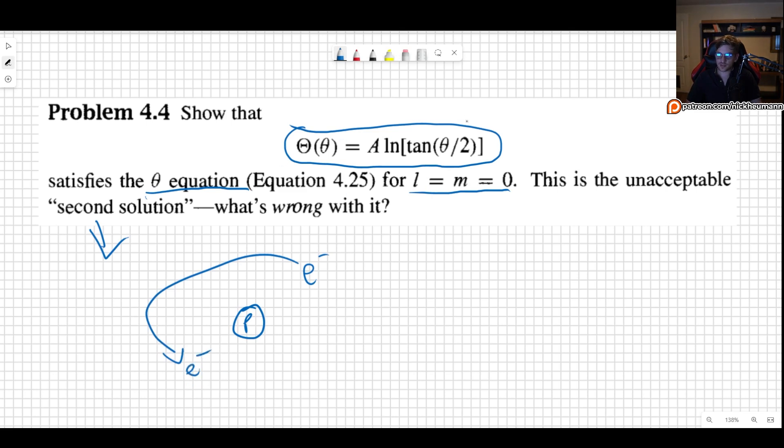However, take a look at this expression. Because if we have theta equal to pi, then we have tangent of pi over two, which is sine of pi over two divided by cosine of pi over two. But what is the cosine of pi over two, it is zero.